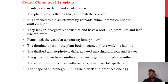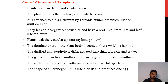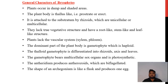The dominant part of the plant body is the gametophyte, which is haploid. The thalline gametophyte is differentiated into rhizoids, axes and leaves. The gametophyte bears multicellular sex organs and is photosynthetic. The antheridium produces antherozoids which are biflagellate. The archegonium is flask-shaped and produces one egg.